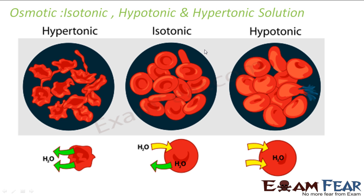To understand osmosis, let's understand these three terms: isotonic, hypotonic, and hypertonic. They are comparative terms. For example, if I say A is bigger than B, I'm comparing A and B. So when I say a solution is hypotonic to another solution, that means I'm comparing it — it's a comparative study.